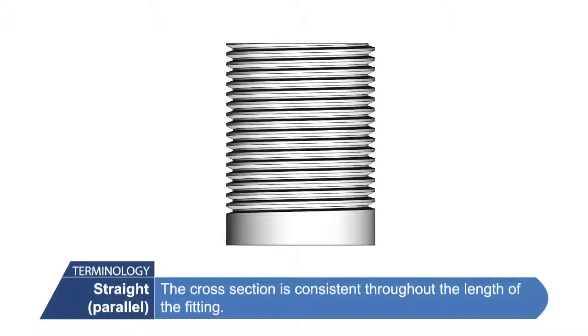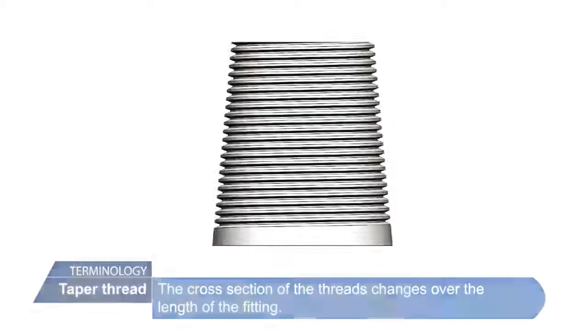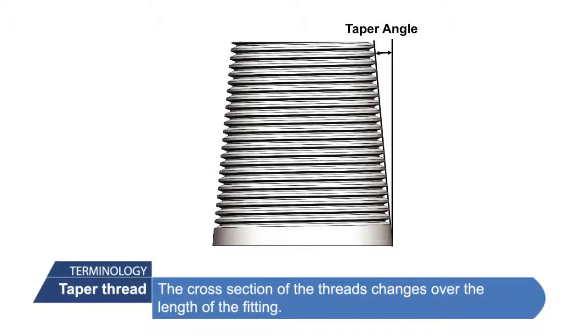Straight or parallel threads: the cross section is consistent throughout the entire length of the fastener. Tapered threads: the cross section of the threads changes over the length of the fastener.